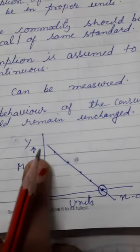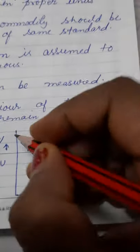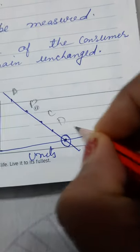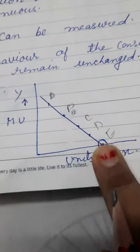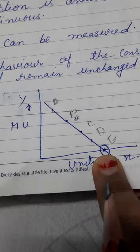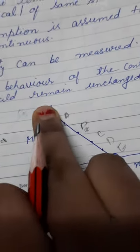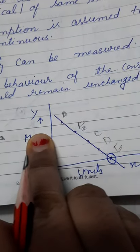This is the marginal utility that decreases from A to B, then C, then D and at the point of E, it is zero. And this is called point of satiety. This is the x-axis where units of the goods are there. Y-axis marginal utility is there.